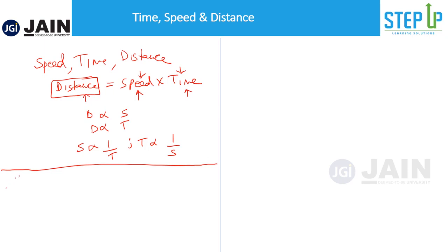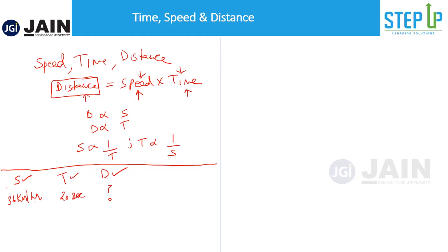In an exam, if you are given speed and time, you can easily calculate distance. The problem arises when the speed is given as 36 kilometers per hour whereas the time is given as 20 seconds and they ask you to calculate distance. In this scenario, the unit of time is in hours for speed but in seconds for time. So how would you calculate distance — would it be in kilometers, meters, and so on?